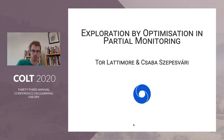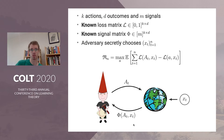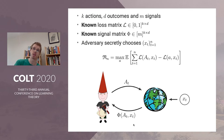Let me start by refreshing your memory about partial monitoring. You have k actions, d outcomes and m signals, and this is a sequential game like a bandit problem. At the start of the game you're given two matrices: the loss matrix and the signal matrix, both with dimensions of the number of actions by the number of outcomes.